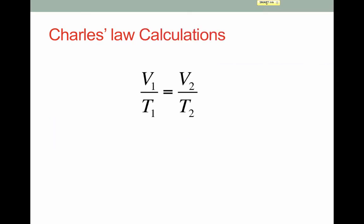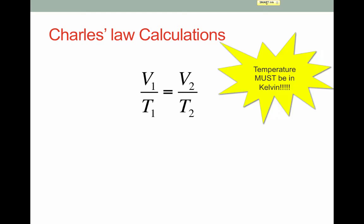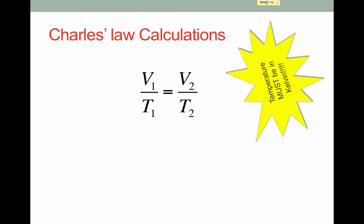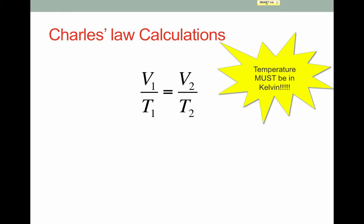There's an equation for Charles' Law: V1 over T1, or initial volume over initial temperature, equals V2 over T2, or new volume over new temperature. What's important is that the temperature here must be in Kelvin. As we just saw, Charles' Law is the basis for the Kelvin scale.